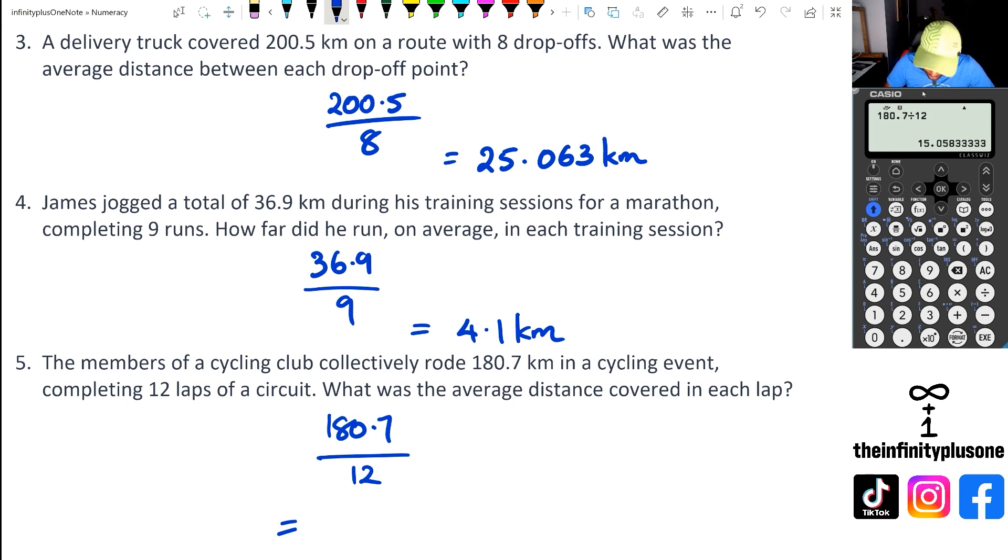Now, we need to make sure that we round this up properly. So we've got 15.058 kilometers. And the reason we're not rounding up is because after the eight, it's a three. So therefore, we're not going to round the number up, we're going to round it down.